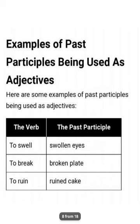Participle acts as an adjective form. For example, in the verb 'talk/talked/talked' — the past participle is 'talked.' 'Sing/sang/sung' — 'sung' is the past participle. This past participle plays the role of an adjective. Here are some examples of past participle being used as adjectives: the verb 'to swell' and 'to break' — look at how they change: 'swollen ice,' 'broken plate.' The past participle here acts as an adjective modifying the noun.